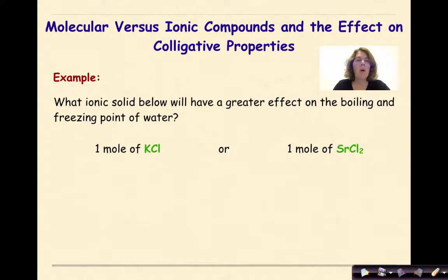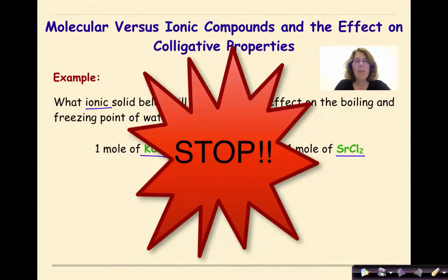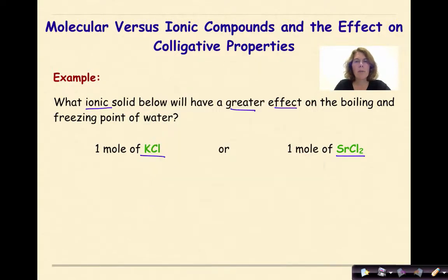We talk specifically about ions here because we're going to be referencing our examples in terms of ionic compounds and the number of ions produced when dissolved in water. For example, what ionic solid below will have the greater effect on the boiling and freezing point of water: one mole of KCl or one mole of SrCl2? I'd like you to stop, think about what your answer would be, write it down, and check your work.